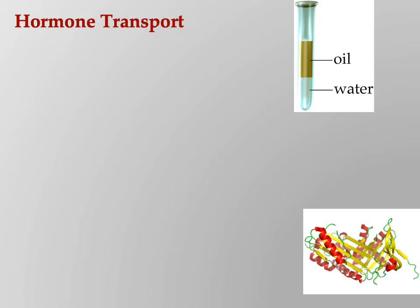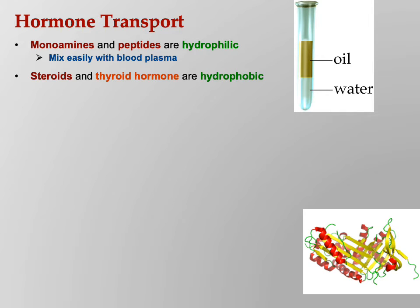Let's talk about getting hormones to their locations. Monoamines and peptides are hydrophilic — they're soluble in water. Blood is 55% plasma, plasma is about 90% water, so monoamines and peptides travel happily through the blood and mix easily with blood plasma. Steroids and thyroid hormone are hydrophobic — they don't travel easily in water. Thyroid hormone is not a steroid, but it behaves like one. They have to bind to transport proteins in order to get transported to their destination.